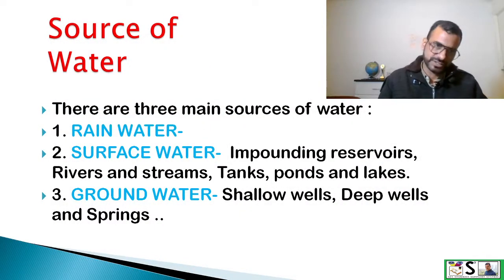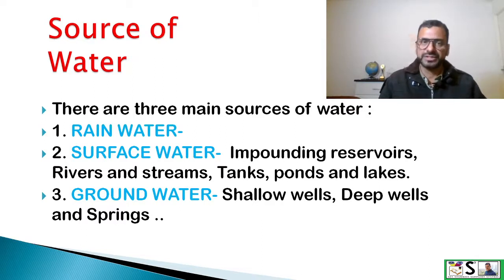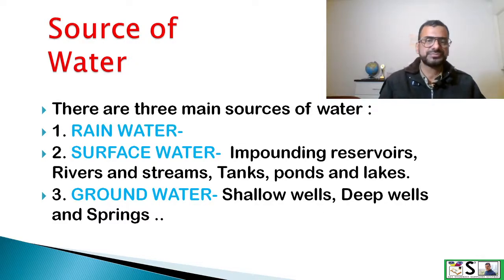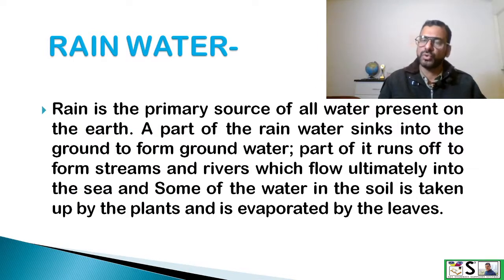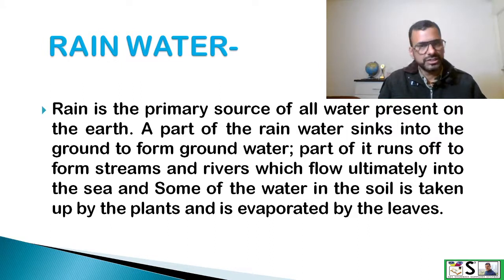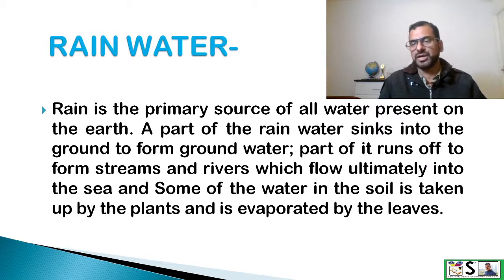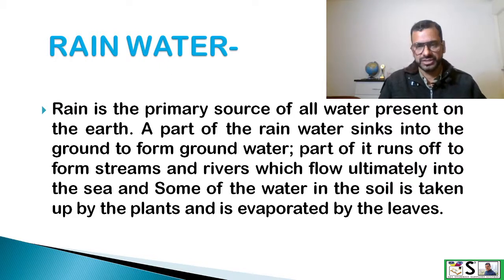Sources of water. There are three main sources of water: rain water, surface water and ground water. Rain water is the primary source of all the water present on the earth. A part of rain sinks into the ground to form ground water, and part of it runs off to form streams and rivers which flow ultimately into the sea.